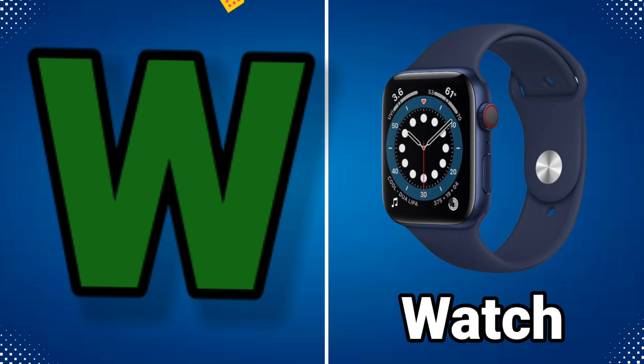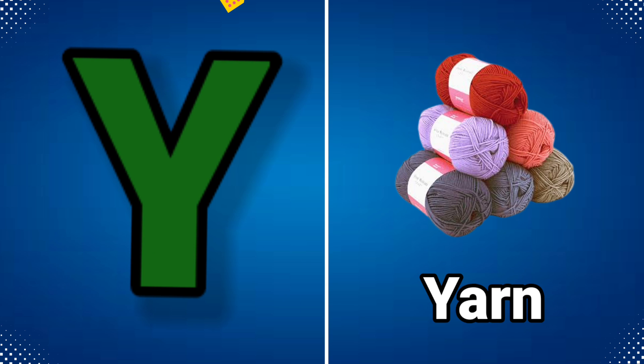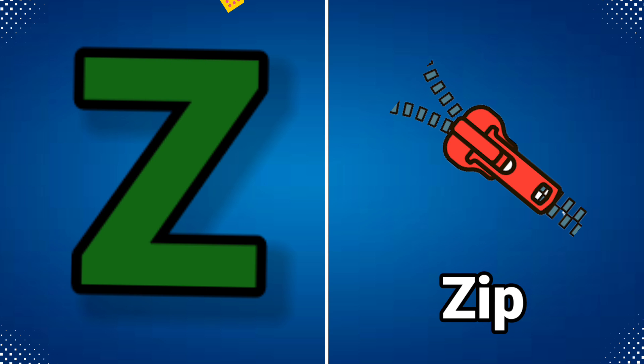W for watch, X for x-ray, Y for yarn, Z for jeep.